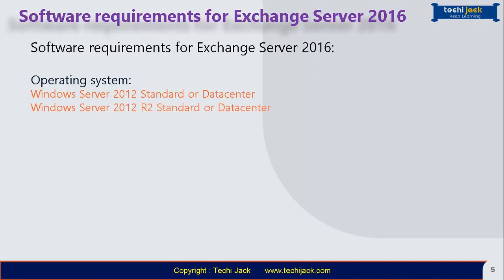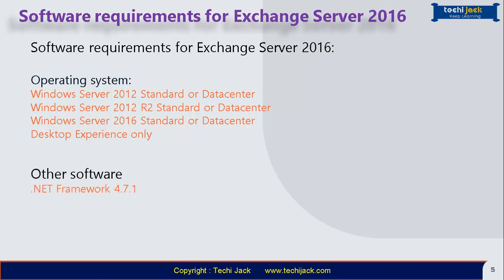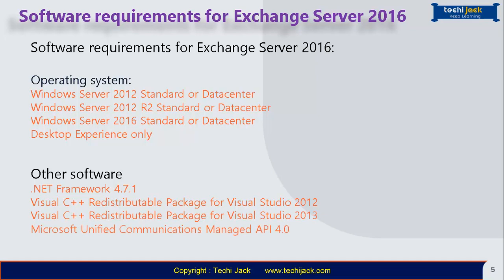For Exchange Server 2016, the supported operating systems are Windows Server 2012 Standard or Datacenter, Windows Server 2012 R2 Standard or Datacenter, or Windows Server 2016 Standard or Datacenter — but only Desktop Experience is supported, unlike Exchange 2019 which also supports Server Core. Other software requirements are similar: .NET Framework 4.7.1, Visual C++ Redistributable Package for Visual Studio 2012 and 2013, and Microsoft Unified Communications Managed API 4.0. Windows roles and features can be pre-installed or installed by the Exchange setup.